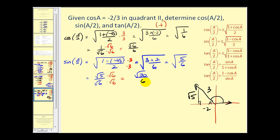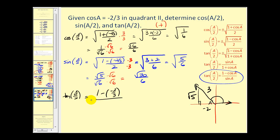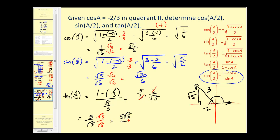We want to find the tangent of A over two. We have a variety of options; I'm going to use the last identity this time. Of course if we have sine of A over two and cosine of A over two, we could just find the quotient of the two, but I'll use the identity: one minus cosine A — which is negative two thirds — all over the sine of angle A. Going back to our reference triangle, sine of angle A is opposite over hypotenuse, or square root of five over three. One minus negative two thirds works out to five thirds. Instead of dividing by square root of five over three, we multiply by the reciprocal. This simplifies nicely to five over the square root of five. Rationalizing, we have five square root of five all over five, which simplifies to square root of five for the tangent of A over two.